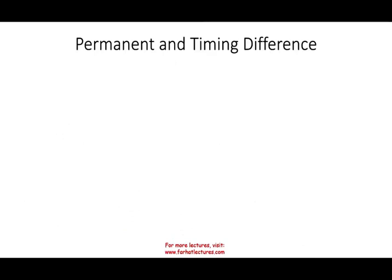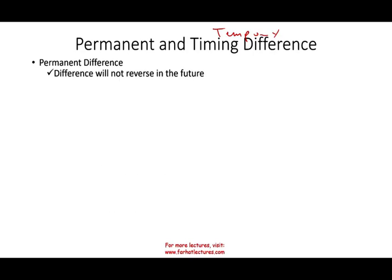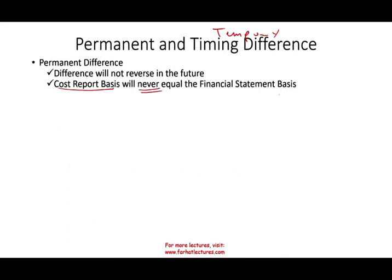We have what's called permanent differences and timing, or temporary, differences. Timing means temporary. Temporary means they would reverse down the road. Permanent means they will never reverse. Permanent differences, as I just told you, will not reverse in the future. The cost you report on the cost report basis will never equal the financial statement basis. The good news about permanent differences — just like in deferred income taxes — is that we don't have to record them.